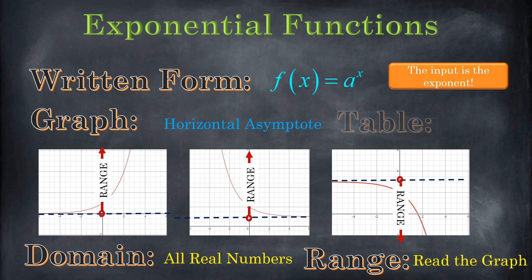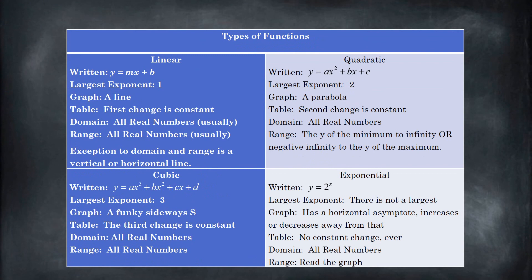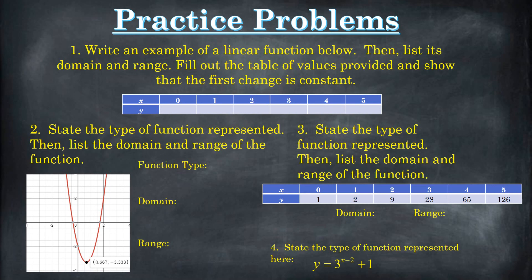If you see a table and you're being asked what kind of function it is, you're not going to find a constant pattern in the changes. So if you do the first, second, third change and you're still getting nothing that's constant, it's probably exponential — especially if the functions you have access to are the ones presented in this video. There's a summary table available — I'll put a link in the description below where you can download this document from thebeardedmathman.com. I'll also put a link to the page with practice problems you can download. If you're trying to learn this, try the practice problems. Leave me a comment if you have a question, give me a thumbs up, subscribe. Until next time, I hope you have a great day.